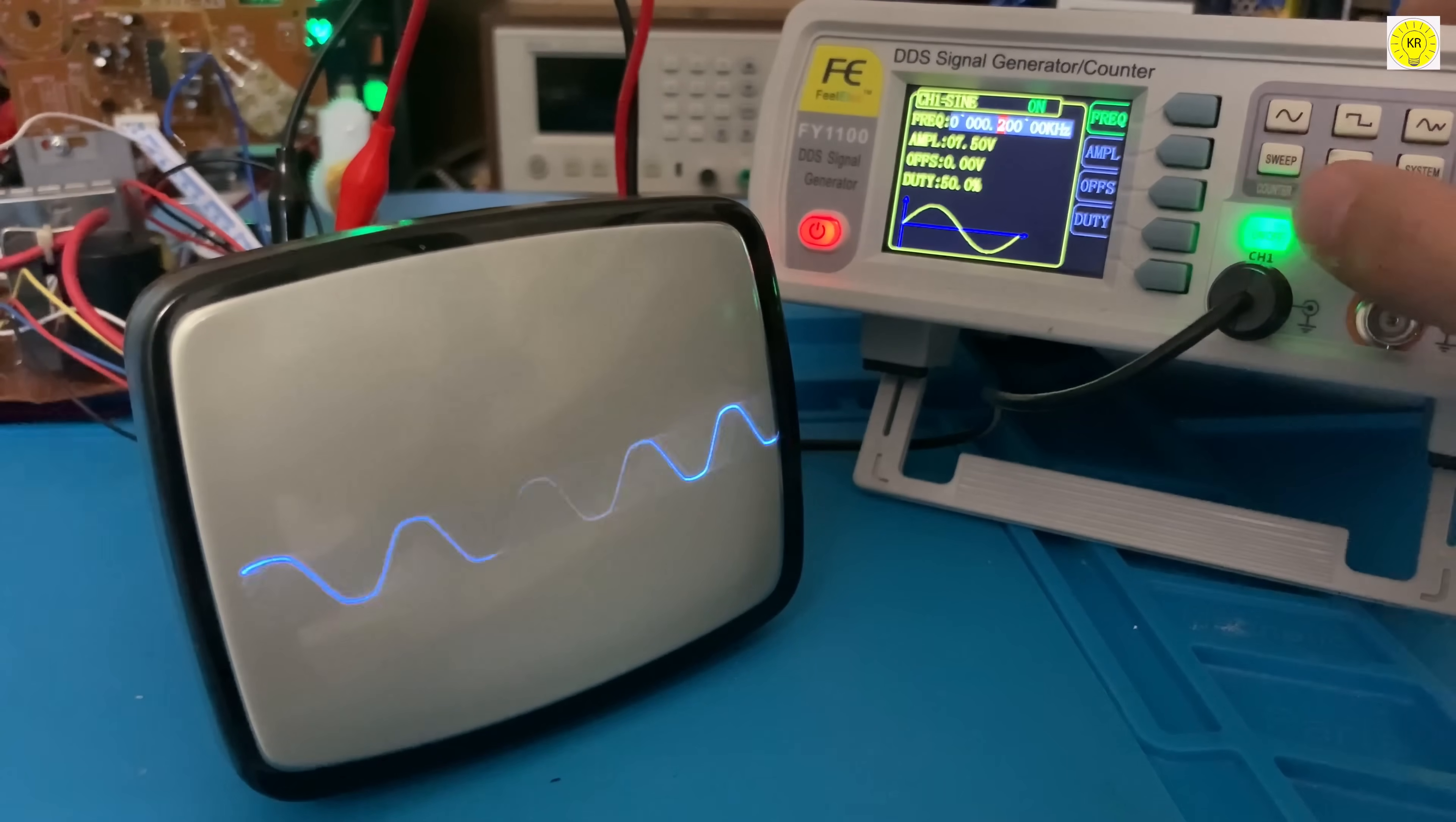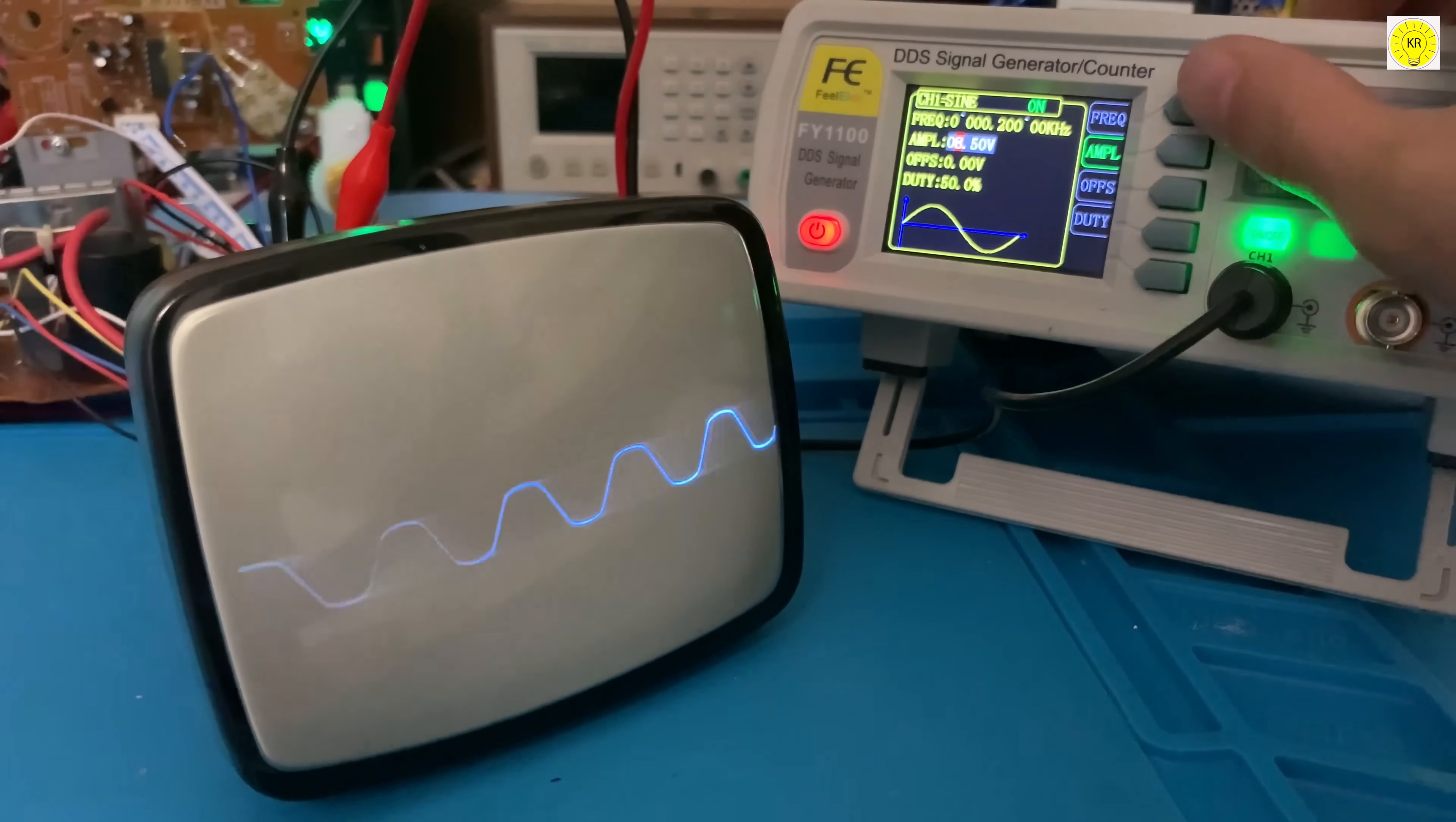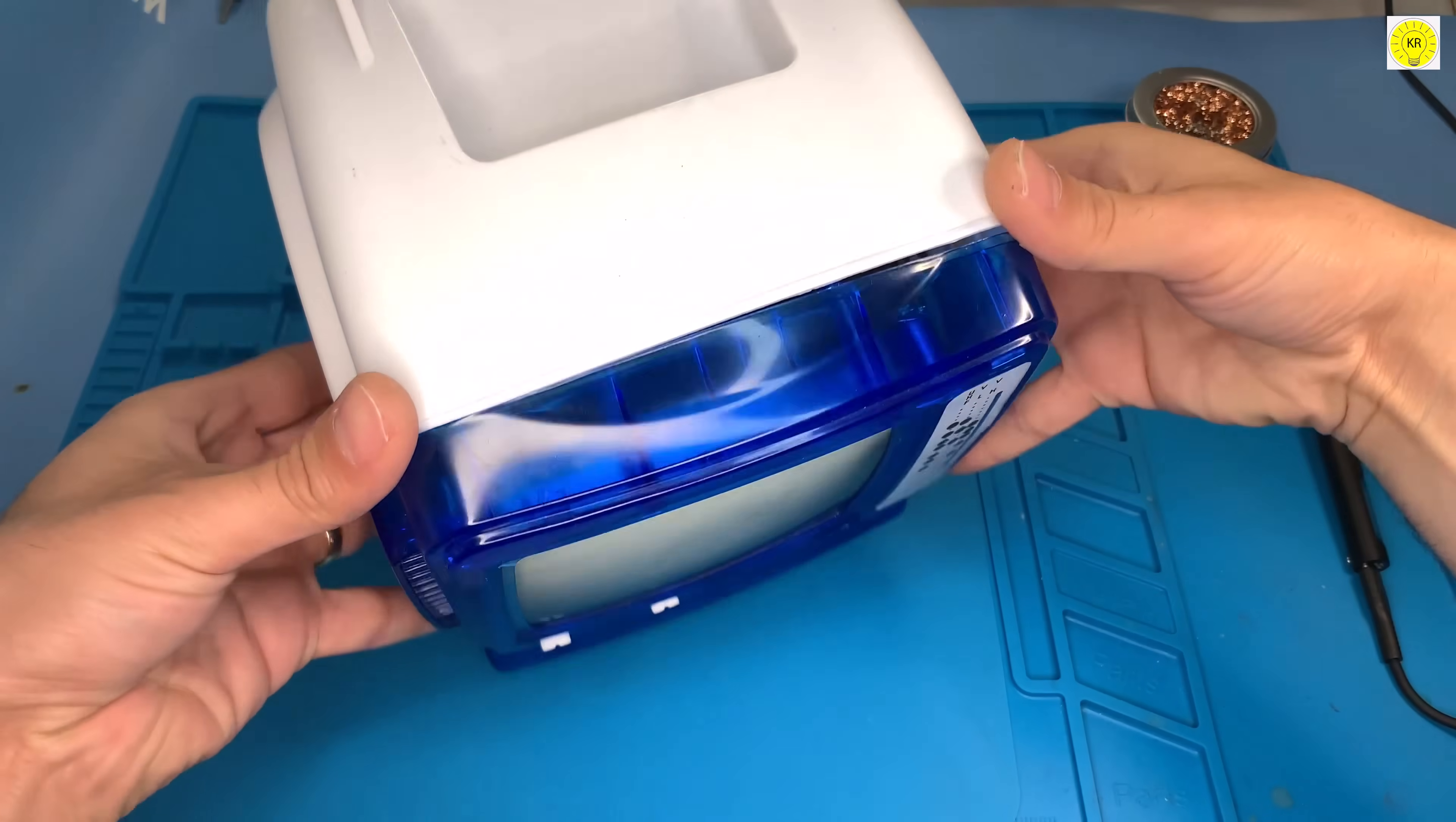Did you know that you can turn an old CRT TV into a crude oscilloscope? It's true. With just a few simple adjustments, you can repurpose an old TV set and use it to display waveforms. All you need is basic soldering skills, some tools, and a little bit of patience.